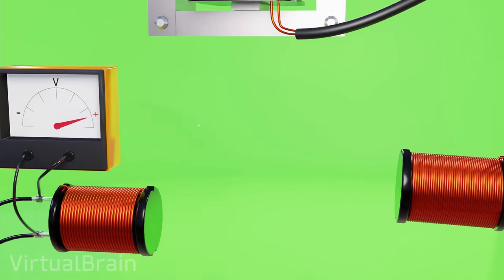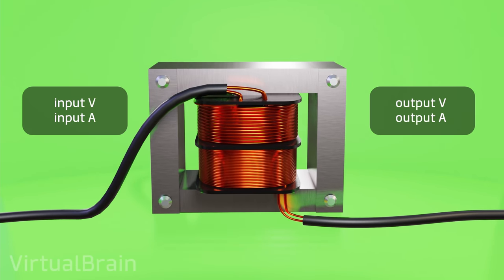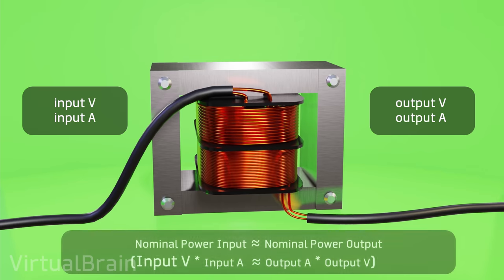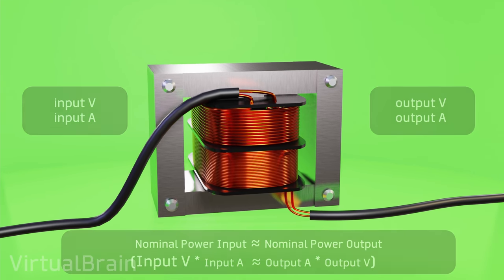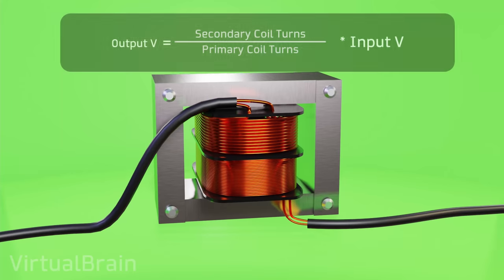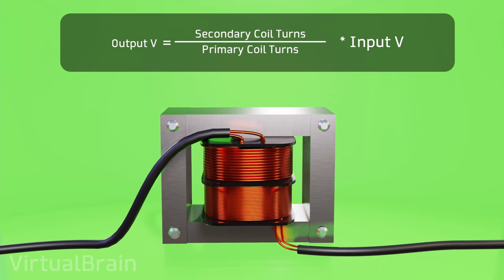The third thing is that the function of a transformer, as its name says, is to transform the voltage and current going through it, but at the same time maintaining a relatively constant nominal power. Moreover, this transformation relationship directly depends on the difference of the amount of turns between both coils.